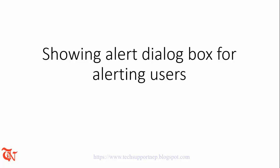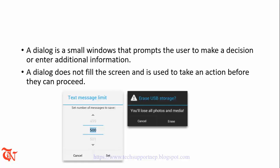Now what is a dialog box? A dialog is a small window that prompts the user to make a decision or enter additional information. As you can see in the figure, there are two dialog boxes shown. The first section is called the title of the dialog, the next section is the message field of the dialog box, and the last section is the action button.